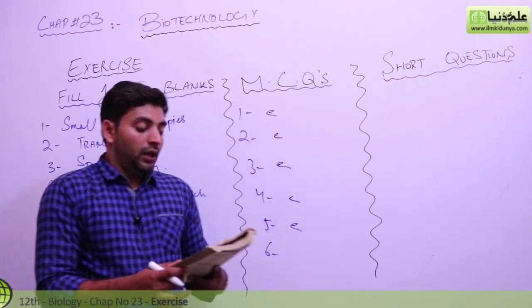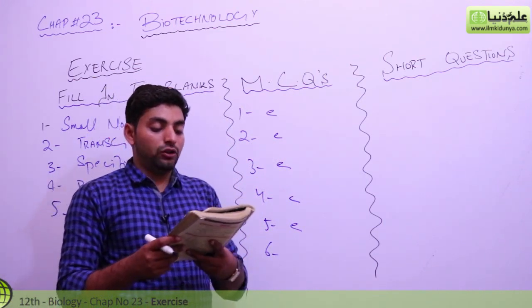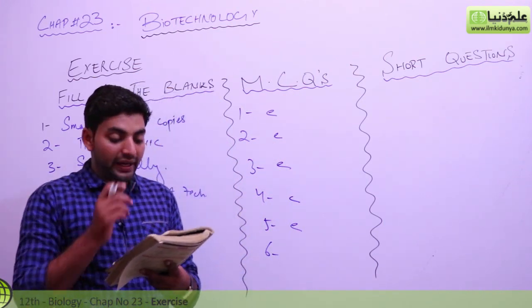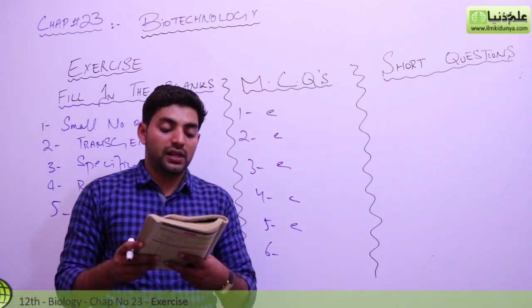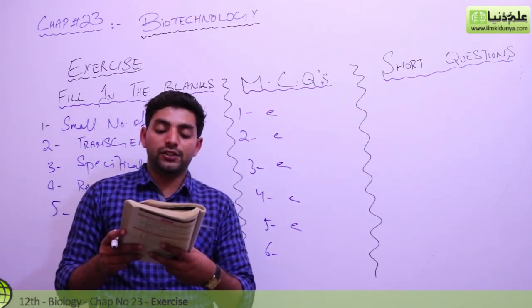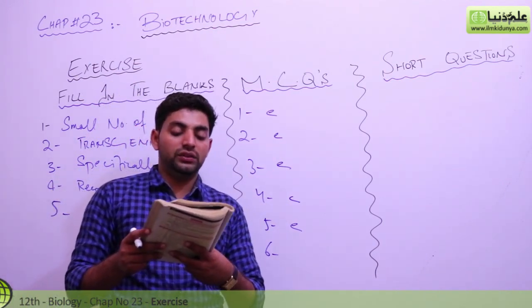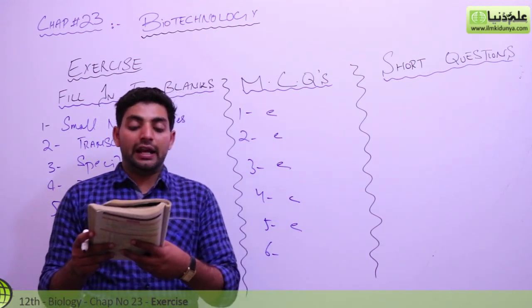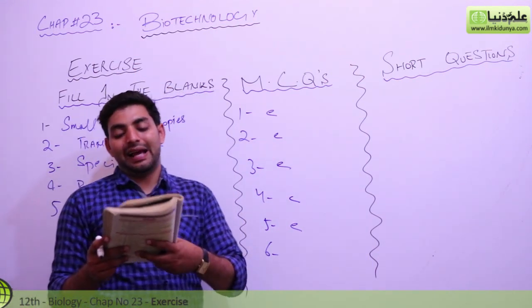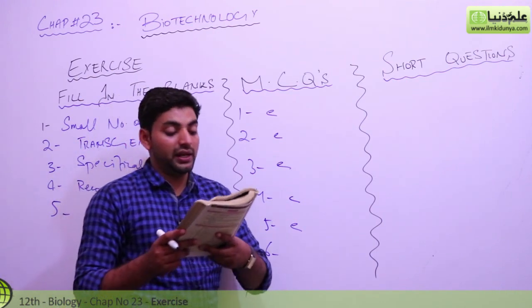Sixth one: gel electrophoresis cannot be used on nucleotides, measure the size of plasmids, tells whether viruses are infectious, measures the change in size of proteins and DNA fragments, all of these are correct. Basically gel electrophoresis measures the change in size of proteins and DNA fragments. So the answer is D.